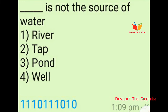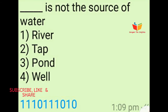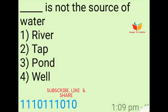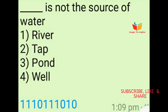Question number six: Dash-dash is not the source of water. Option number one is river, option number two is tap, option number three is pond, and option number four is whale. The answer of this question is option number two, means tap.